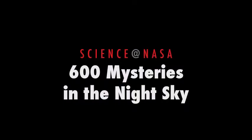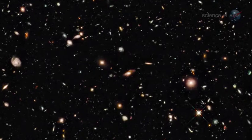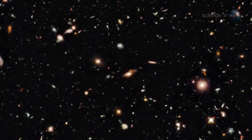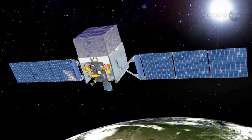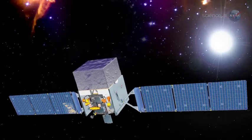600 Mysteries in the Night Sky, presented by Science at NASA. The Universe is a big place, and there are a lot of things out there that astronomers can't identify. NASA's Fermi Space Telescope has just found about 600 examples.